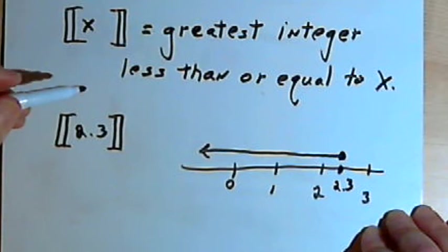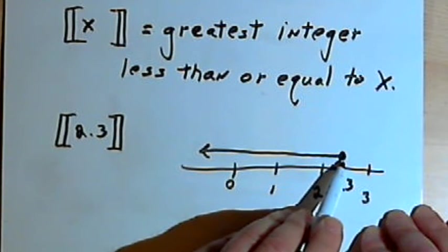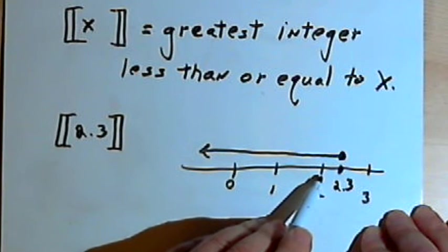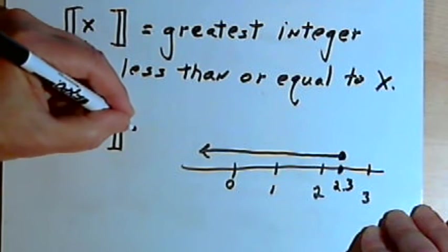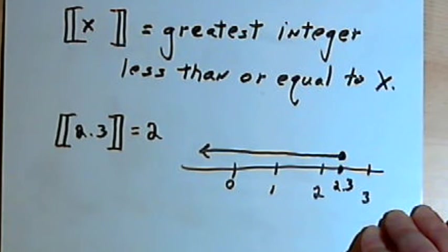And I want the largest, the greatest integer I can find. So working down from 2.3 and going to the left, the first integer I get to is 2. So the greatest integer value of 2.3 is going to be 2.